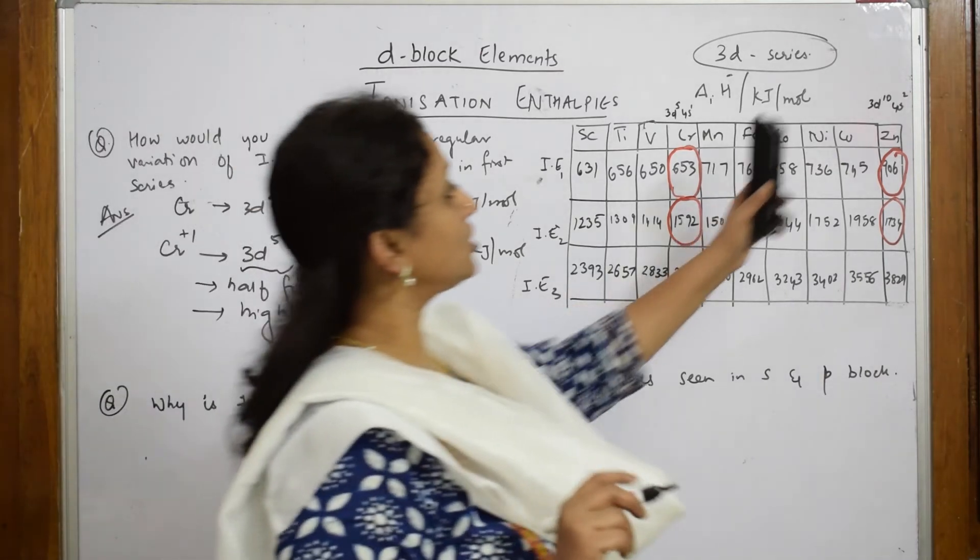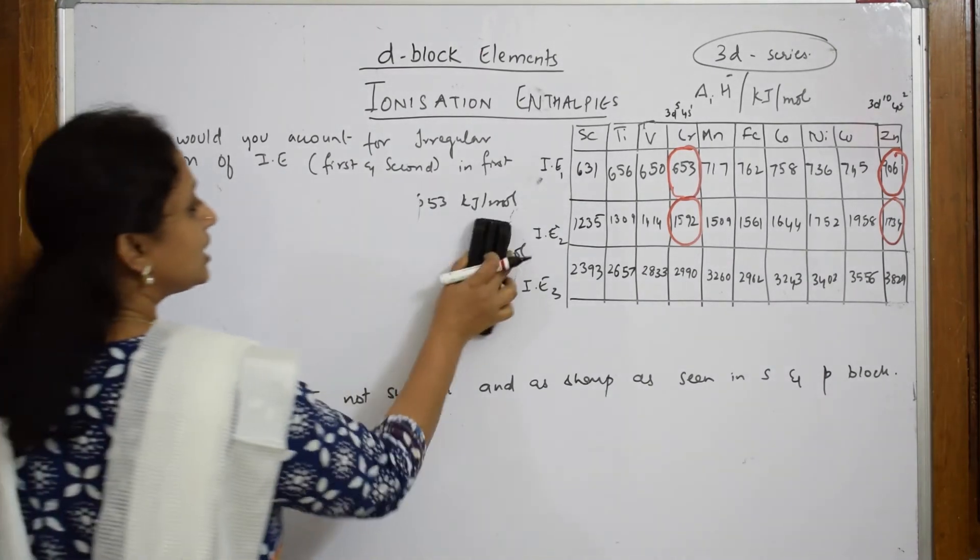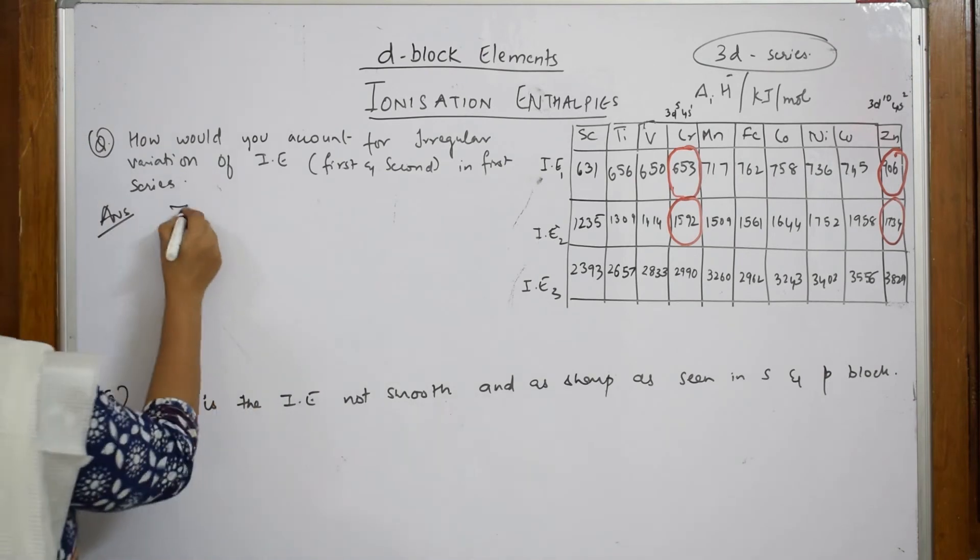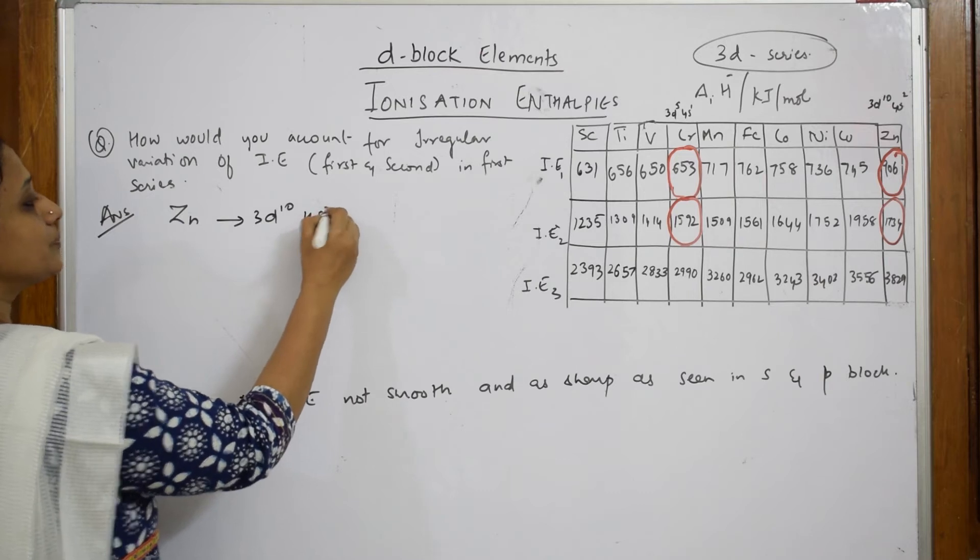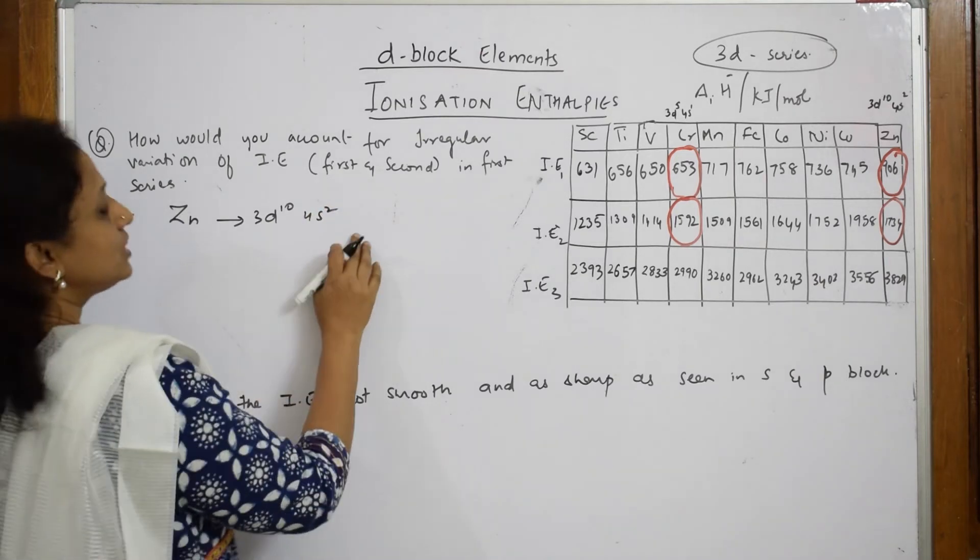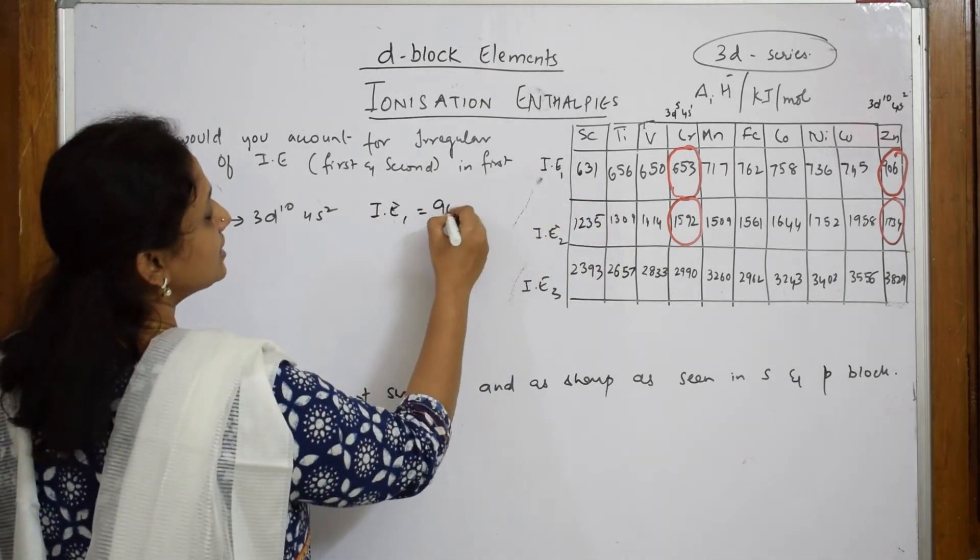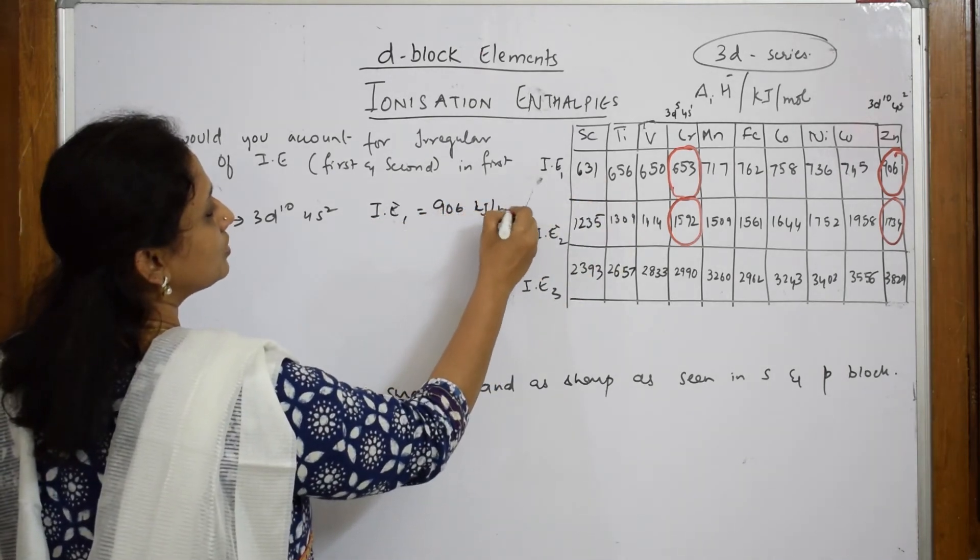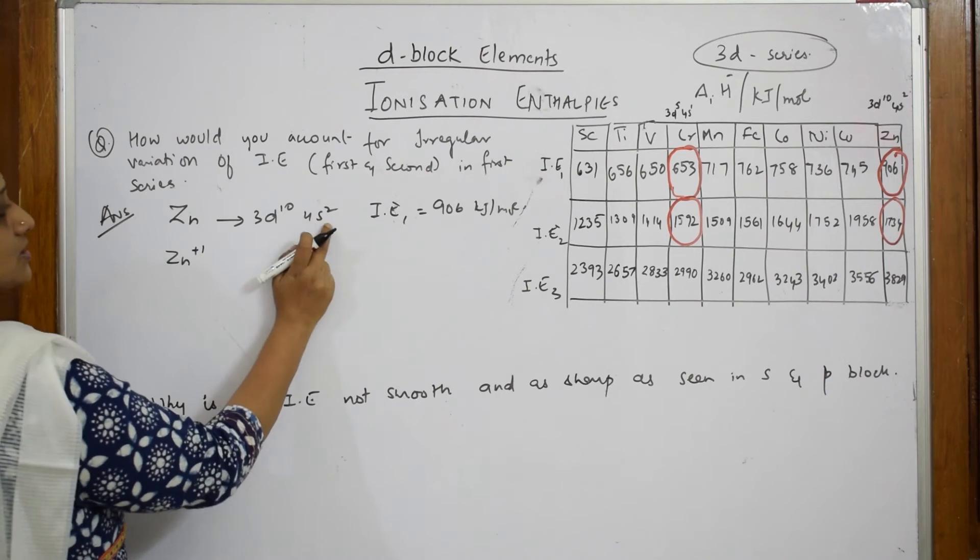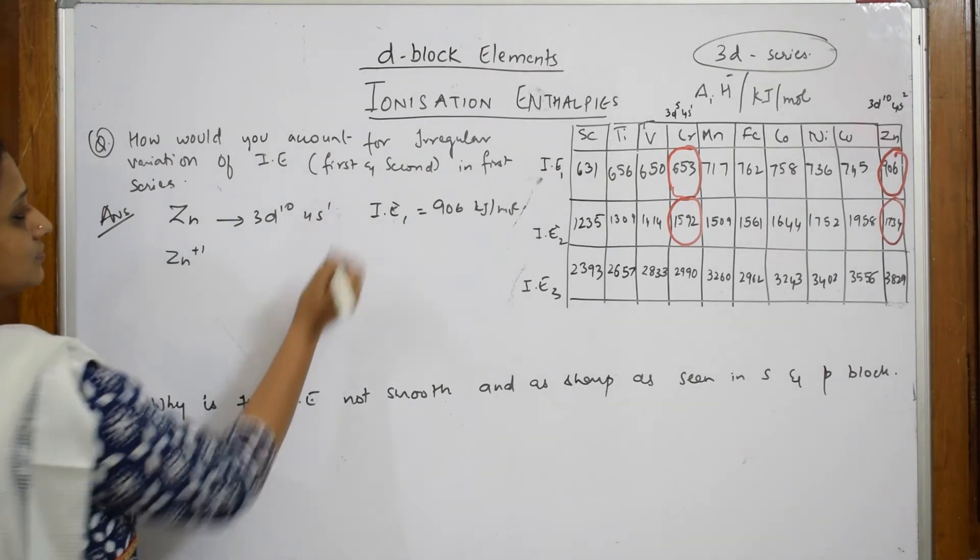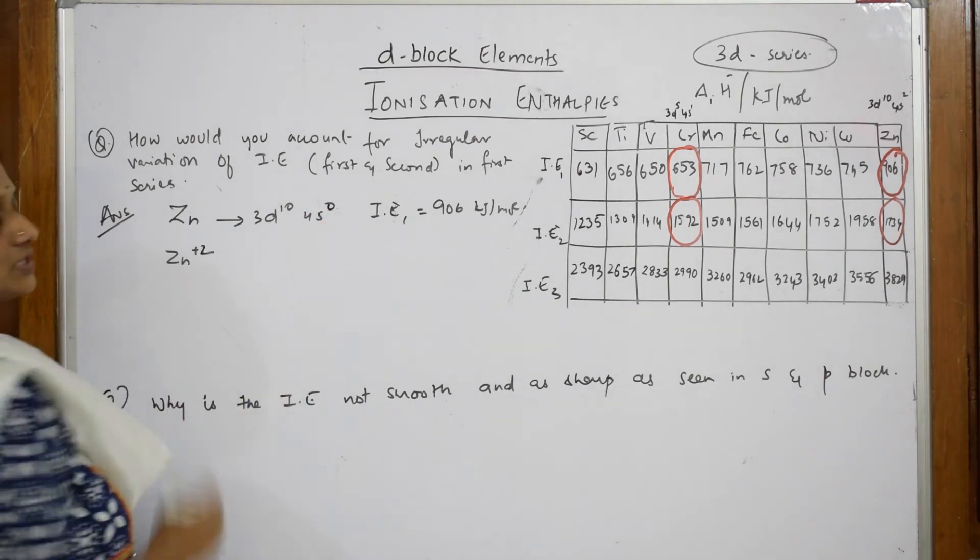Now, I am going to explain the concept with zinc. Let us erase this chromium and write for zinc. Zinc is atomic number 30 and it is 3d10, 4s2. Now, I have to take out one electron. I have to apply first ionization enthalpy. How much is it? It is 906 kilojoules per mole. Now, suppose if I am taking first one electron, Zn plus 1, this becomes 4s1. Then again you take out one more electron, Zn plus 2, this becomes zero.